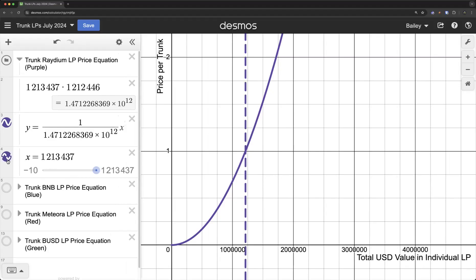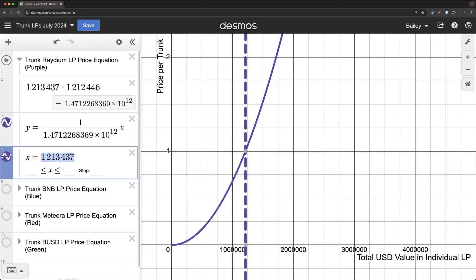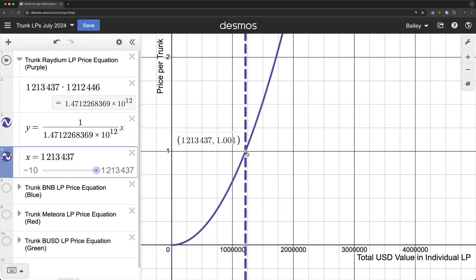You can look right here guys, and we can take the amount of USDC that's in the pool right now. And then you can just track it up, and you're going to see that it's just over $1 right now for trunk in that pool. So that's our Raydium pool.